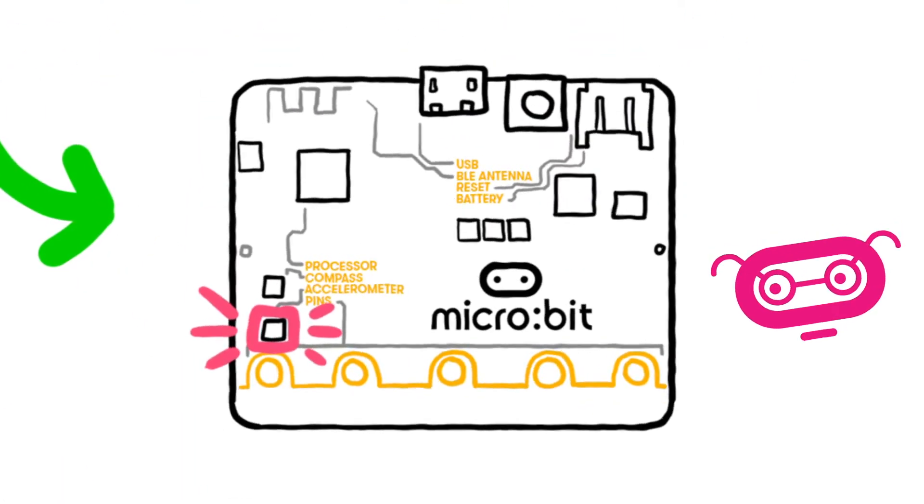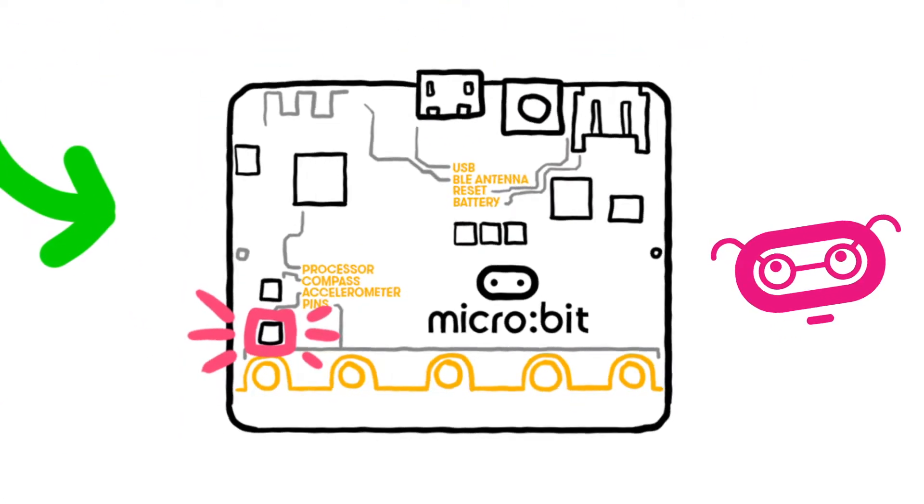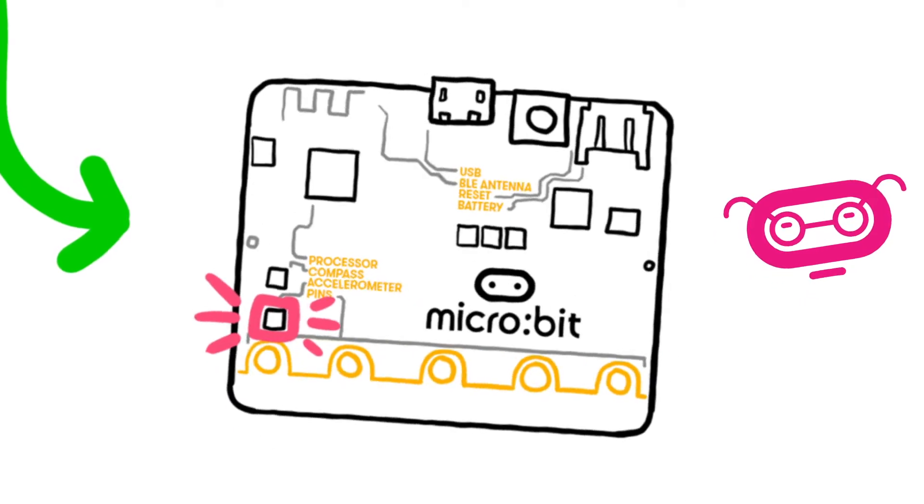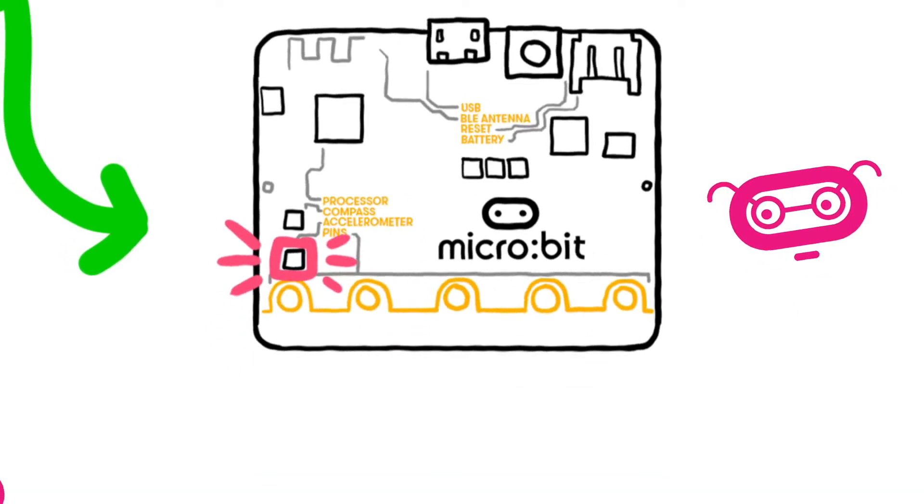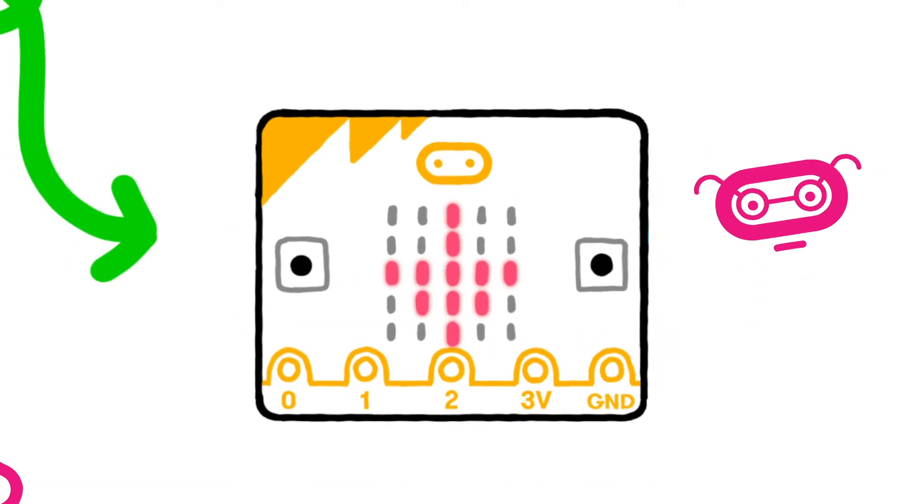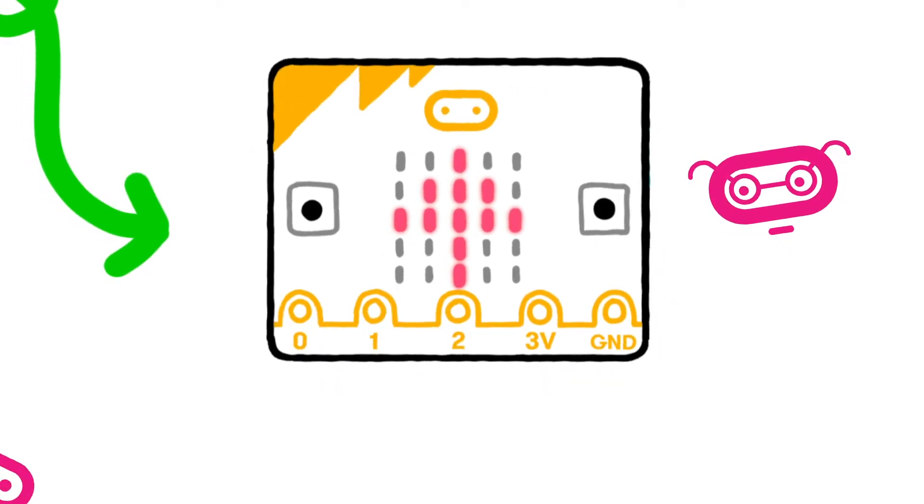The BBC micro:bit accelerometer measures movement of the micro:bit, so when you tilt it left to right, backwards and forwards, and up and down, the micro:bit knows it's being moved and which way it's being moved.